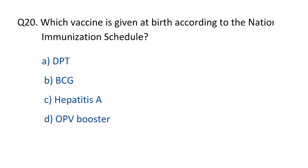Question No. 20. Which vaccine is given at birth according to the national immunization schedule? The right option is option B, BCG.